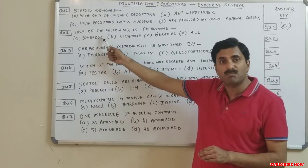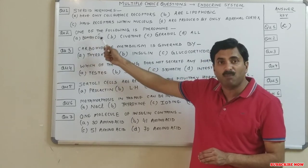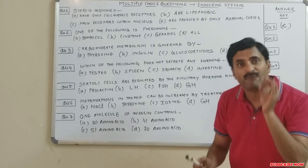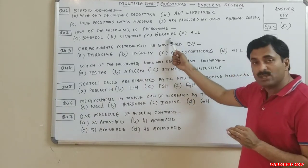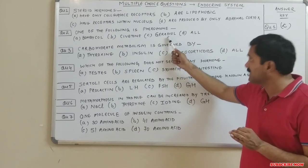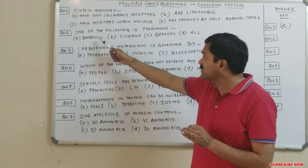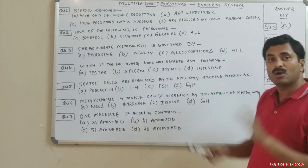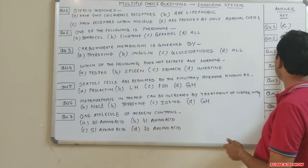Yes, bombycol is a pheromone secreted by the silk moth. Civitone is also a pheromone secreted by the cat. Geradiol is also a pheromone secreted by the honeybee. Since all three — bombycol, civitone, and geradiol — are pheromones, the answer for question two is D: all of the above.